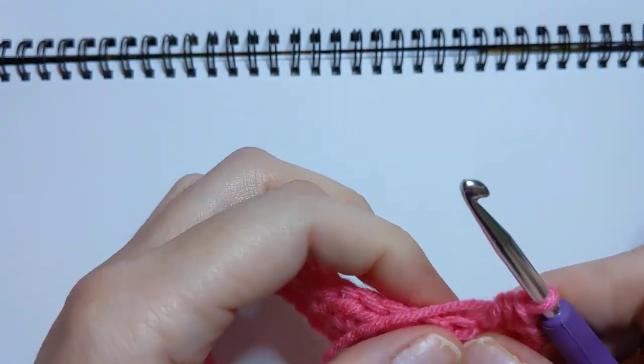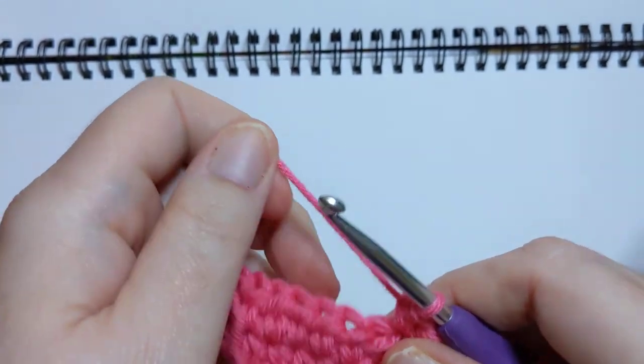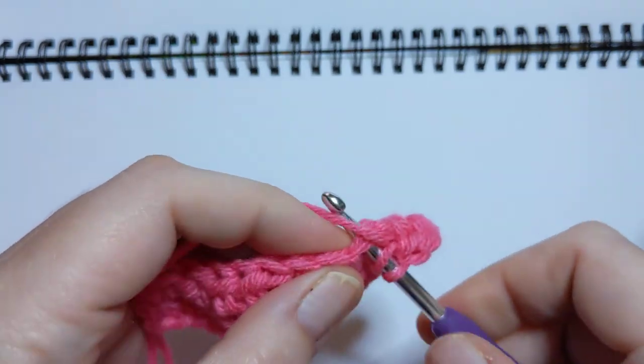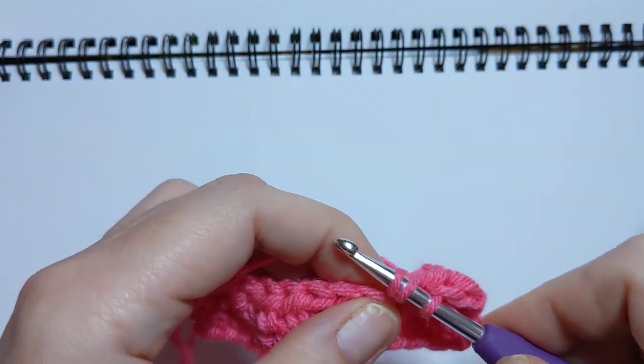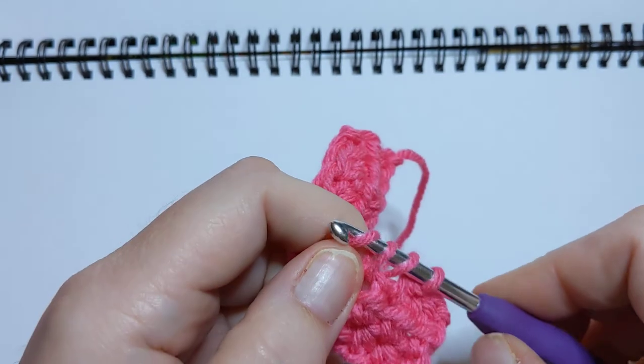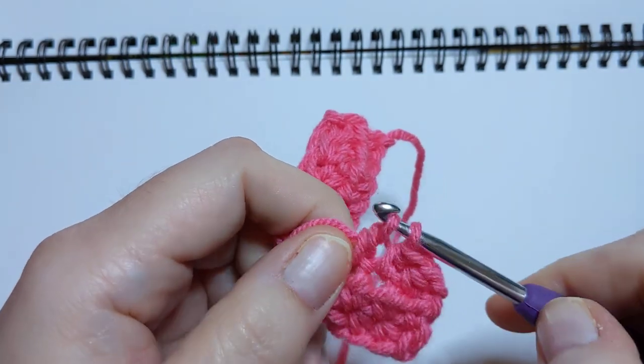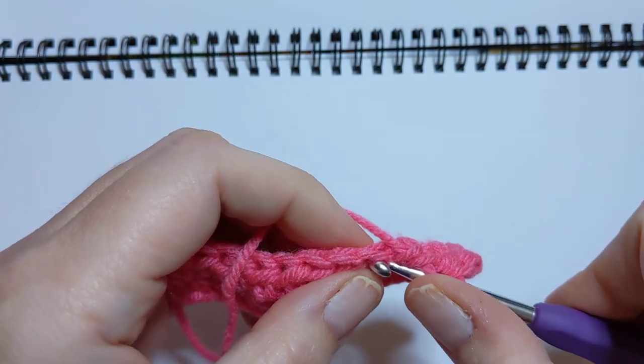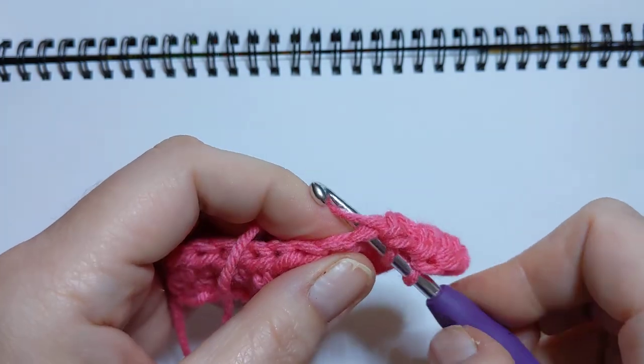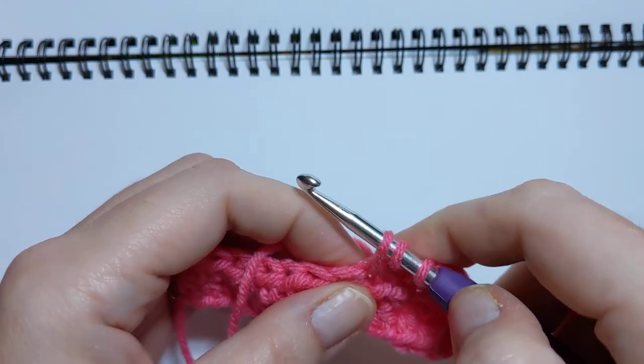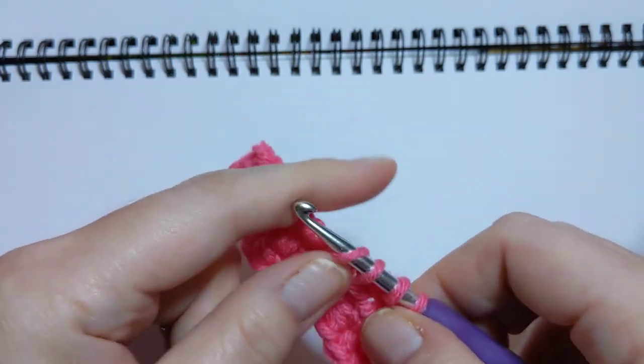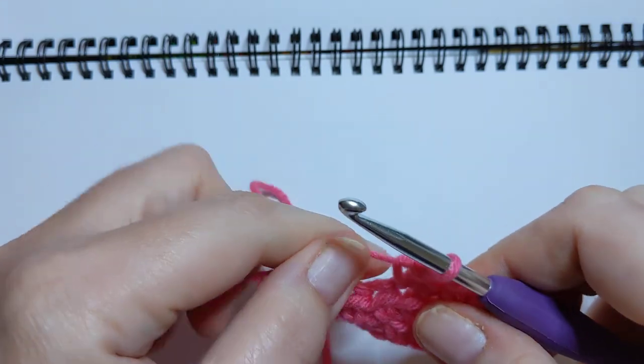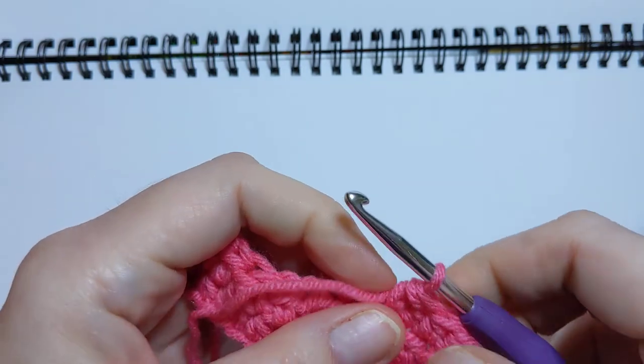Let's crochet two together right here. We're going to yarn over, go into the stitch just like normal, pull up a loop, but only go through the first two on our hook, leaving two loops. Then we're going to go into the next stitch, pull up a loop—now we have three, just as if we've done a regular half double crochet—and pull through all three loops on the hook. We have decreased another stitch.